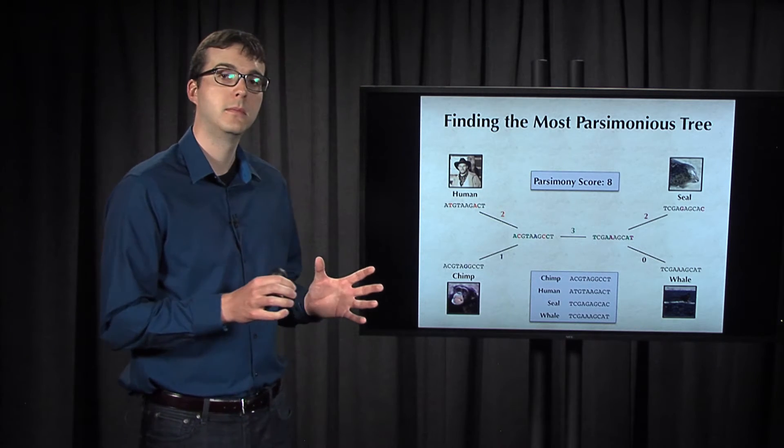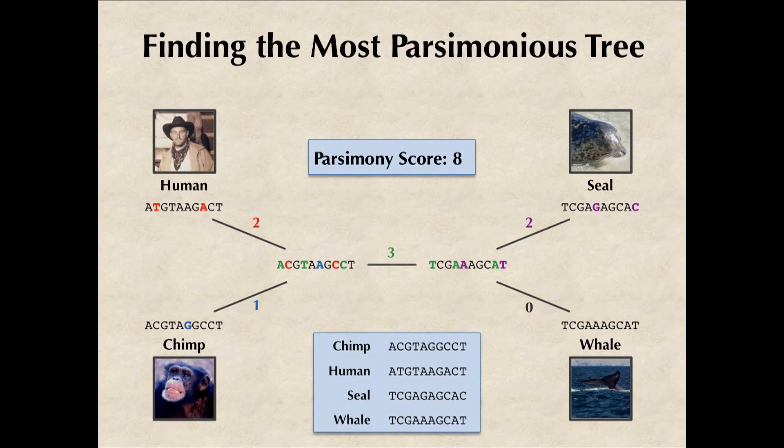For example, here was an optimal solution to the small parsimony problem for our toy multiple alignment of four species if we're dealing with unrooted trees. But it assumes that chimp and human are neighbors and that seal and whale are neighbors.